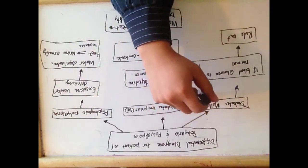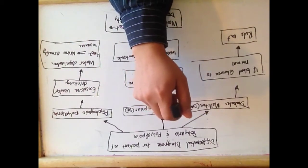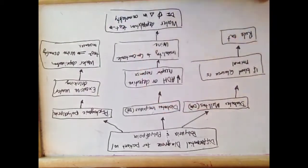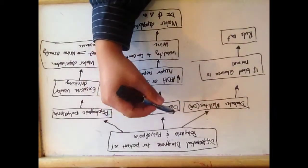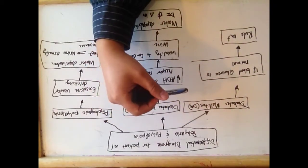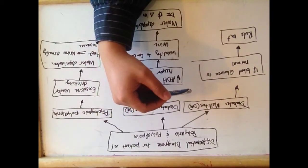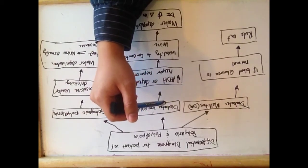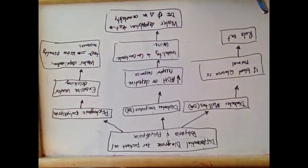To see if patients have diabetes mellitus, we check their blood glucose to see if it's within the normal range of about 70 to 110. If it's a normal glucose level, then we rule out that the patient has diabetes mellitus.